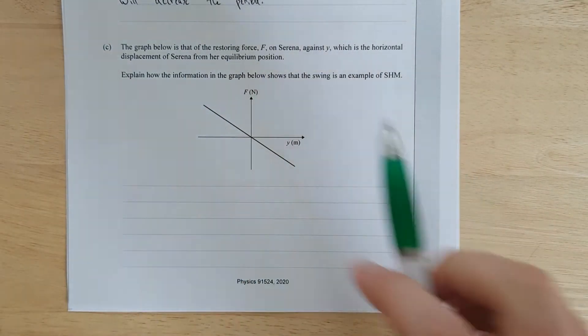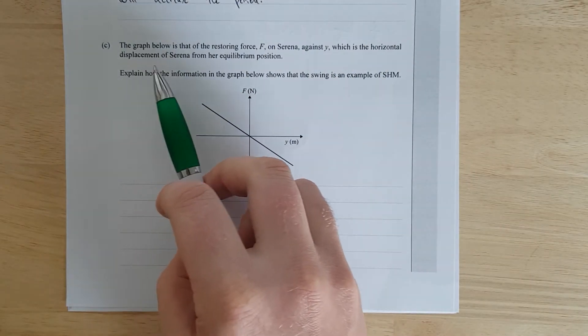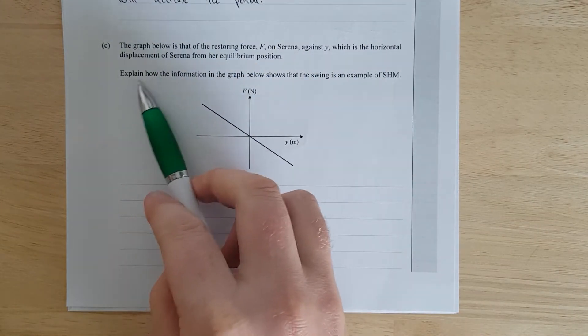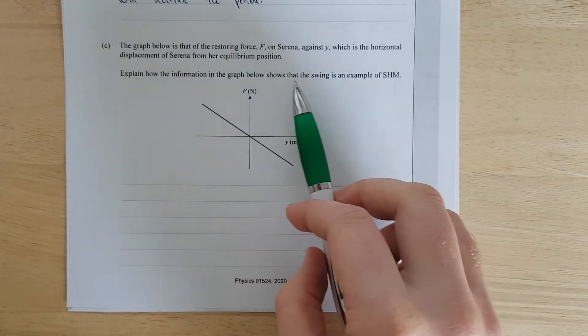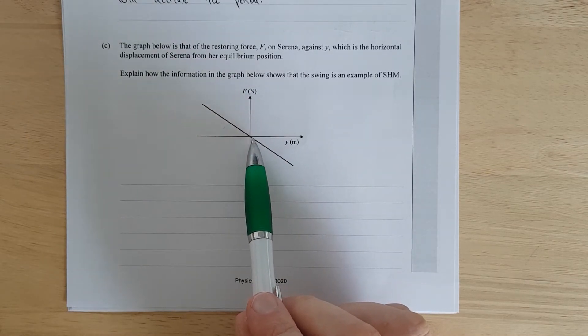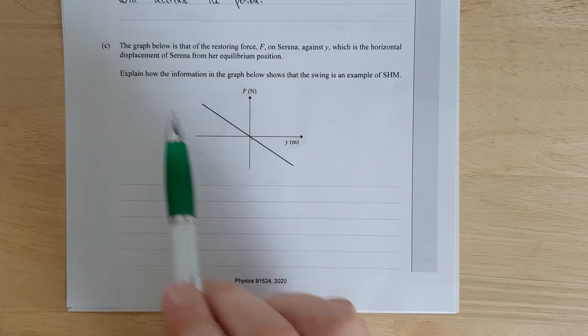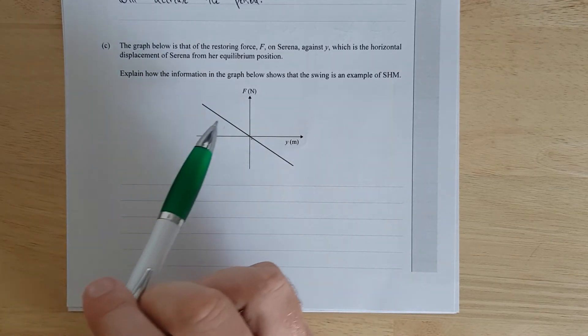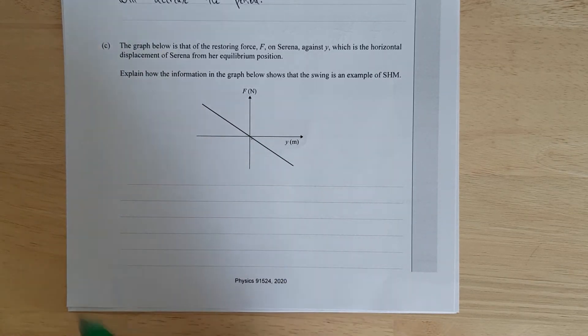The graph below shows that the restoring force on Serena against Y, which is a horizontal displacement from her equilibrium position. Explain how the information in the graph below shows that the swing's an example of SHM. In most exams, they're like, what is the definition for SHM? The definition of SHM is that in order for simple harmonic motion to occur, the restoring force must be equal to the negative of the displacement, or linearly proportional to the negative of the displacement. And as we can see, the restoring force is a negative gradient, proportional to the displacement. I'll just pause and write that up.